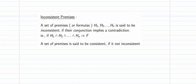The last method is consistency and inconsistency. When the set of hypotheses or formulas leads us to a contradiction — the conjunction of them implies false — we say the given set of premises is inconsistent. Conversely, if they lead us to true, you call the set of premises consistent.